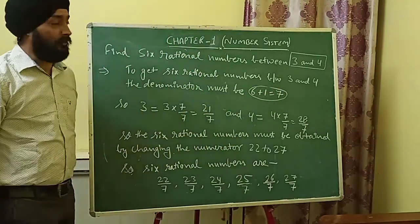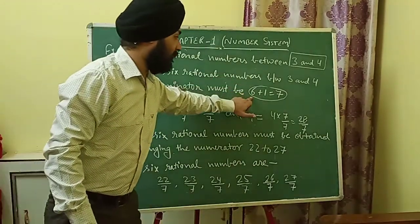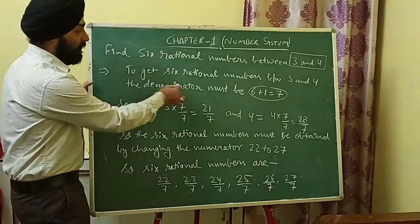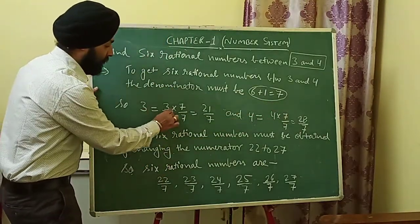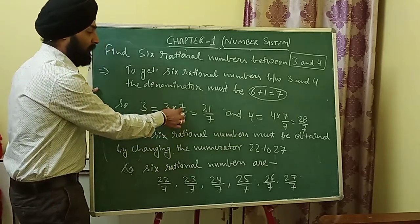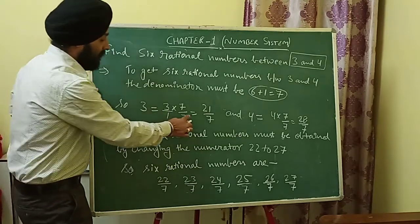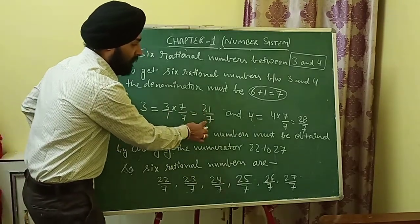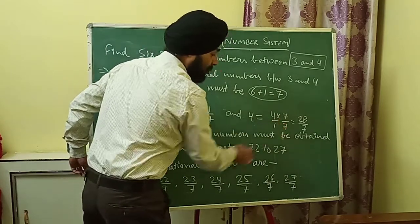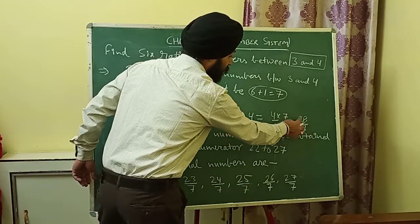To find six rational numbers, the denominator must be six plus one, that is seven. So we write 3 as 3/1 and multiply numerator and denominator by 7 to get 21/7. Similarly, 4 equals 4/1 multiplied by 7/7, which gives us 28/7.